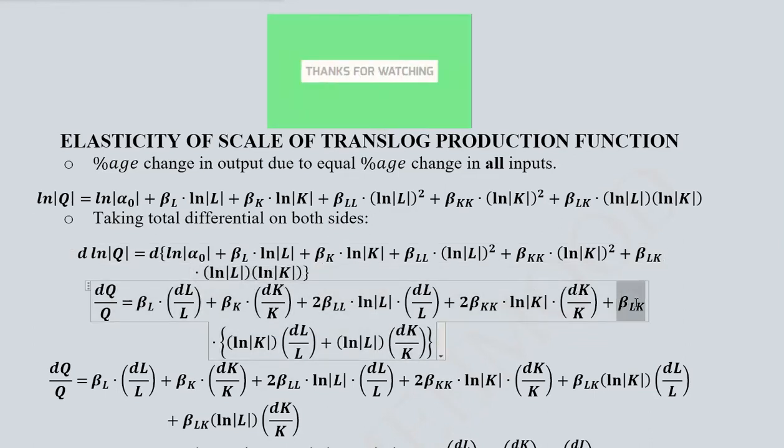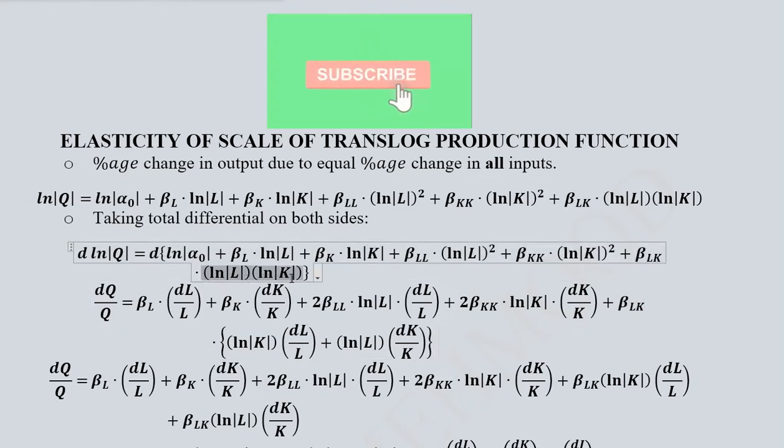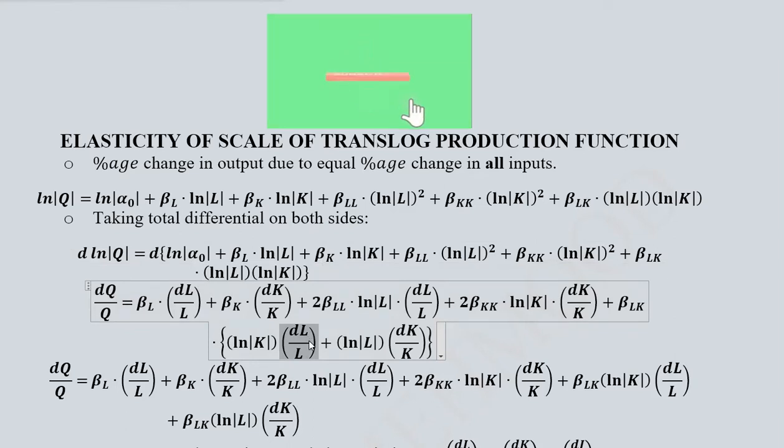And then we have βLK multiplied with this product of the natural log of the two variables. So βLK remains outside because it is a coefficient whereas here we take the differentials turn by turn because these are two terms getting multiplied.